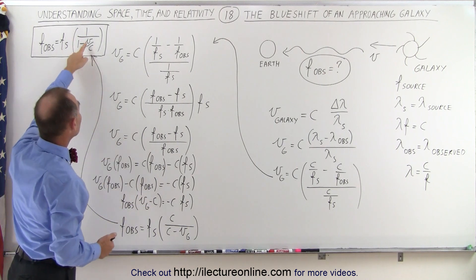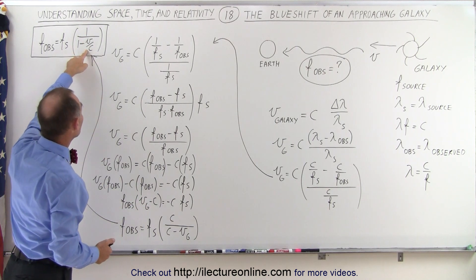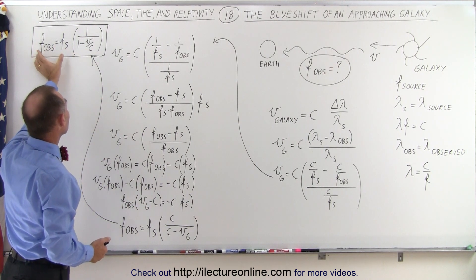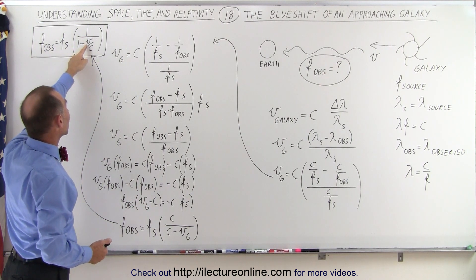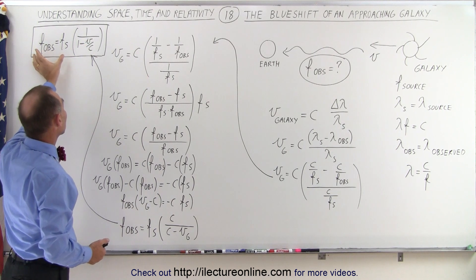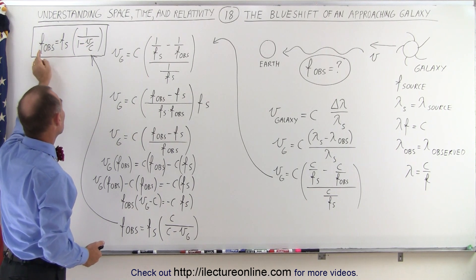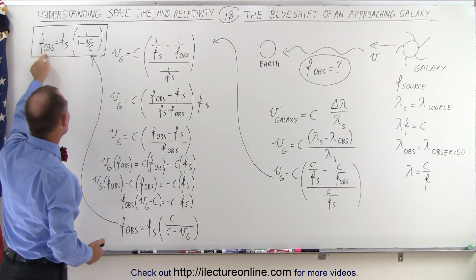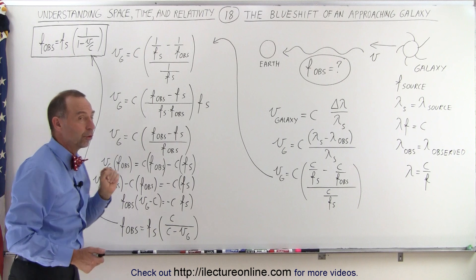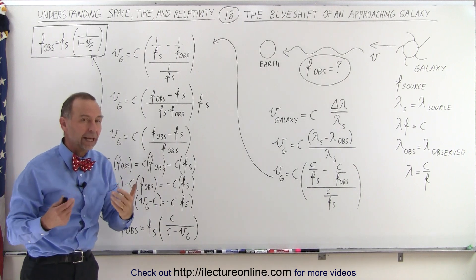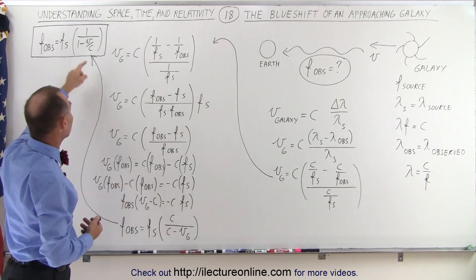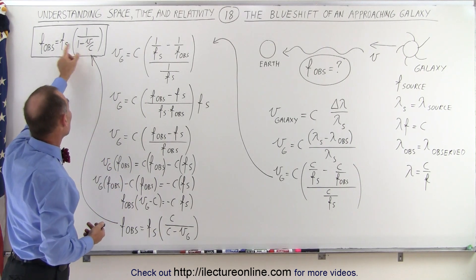Now, if V is very small, of course there won't be much of a difference. But if V becomes very large, there can be a very large difference between the frequency observed and the frequency from the source. We'll take a look at that when we start reaching relativistic velocities.